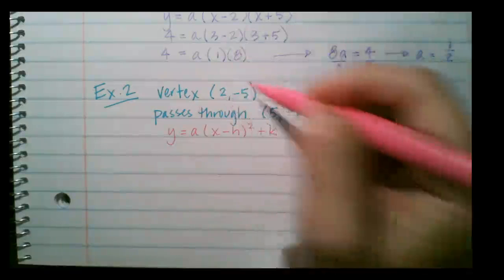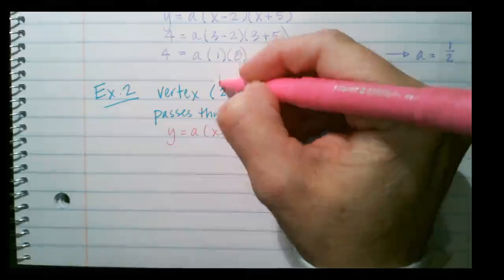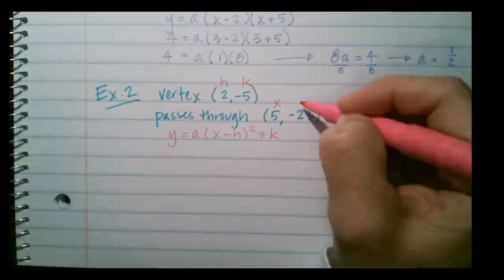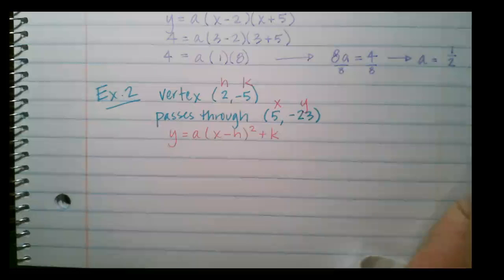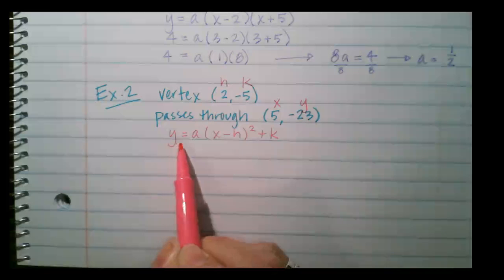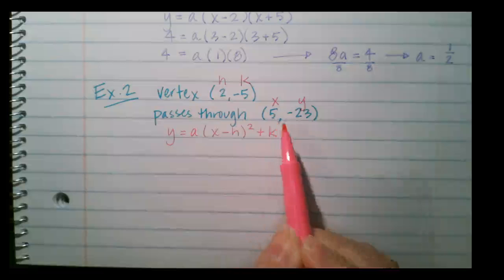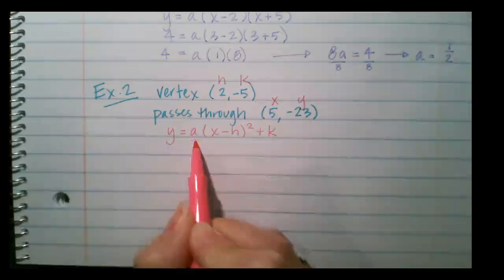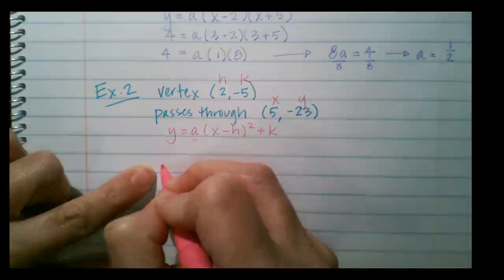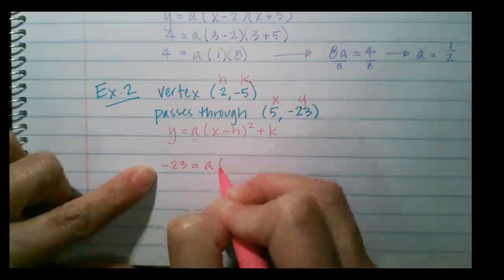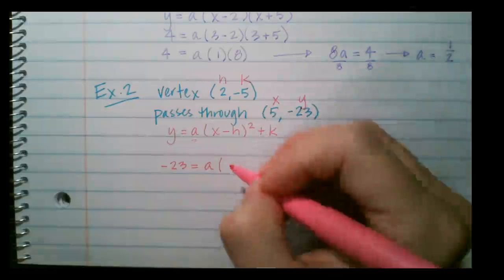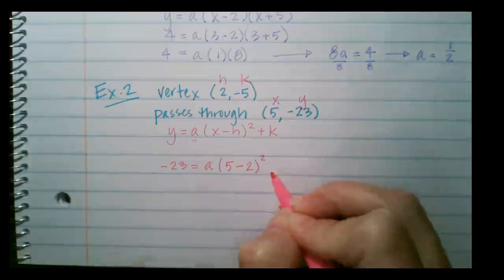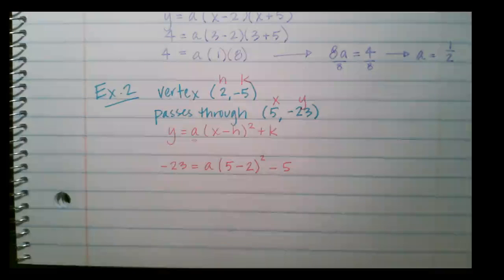I know h is 2 and k is negative 5 from the vertex, and the point (5, negative 23) gives me my x and y values. So I can solve for a. The equation becomes: negative 23 equals a times (5 minus 2)² plus (negative 5).